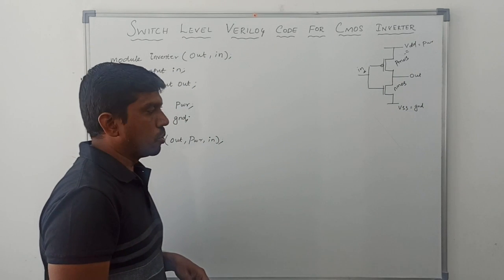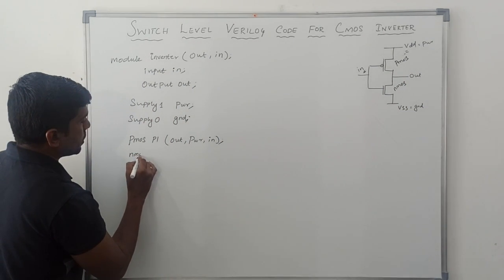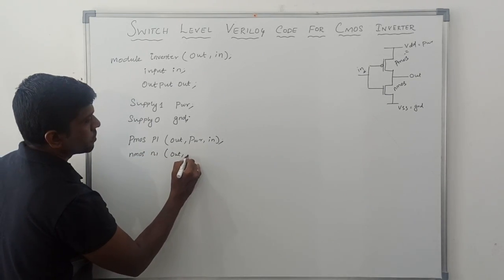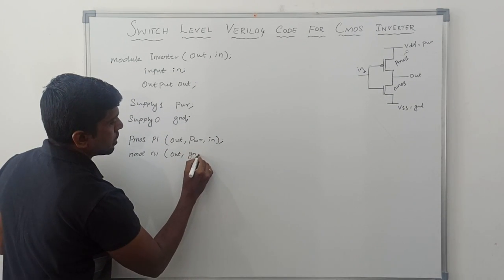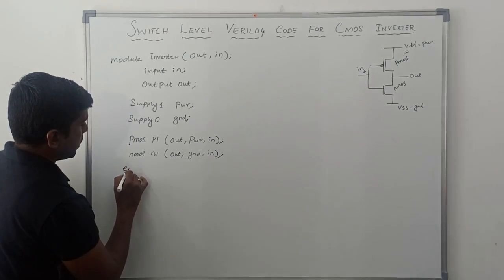Then come to NMOS transistor. The keyword is NMOS, then M1, out, here ground and in. Ground and in. Then end module.